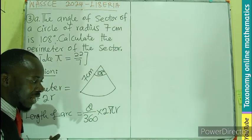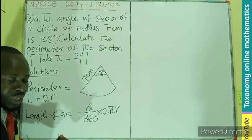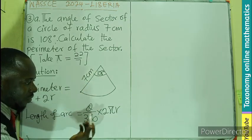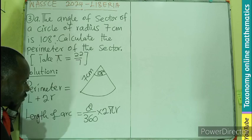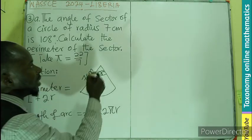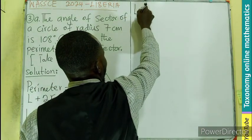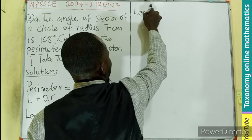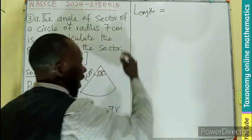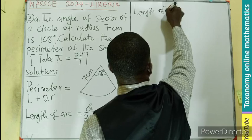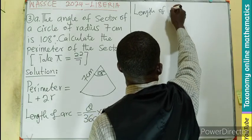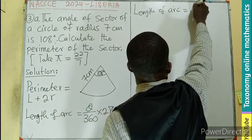So this is the formula. What do we do? We only do substitution. Theta the angle, π, and r are given. Let's do our substitution. So length of arc is going to be: